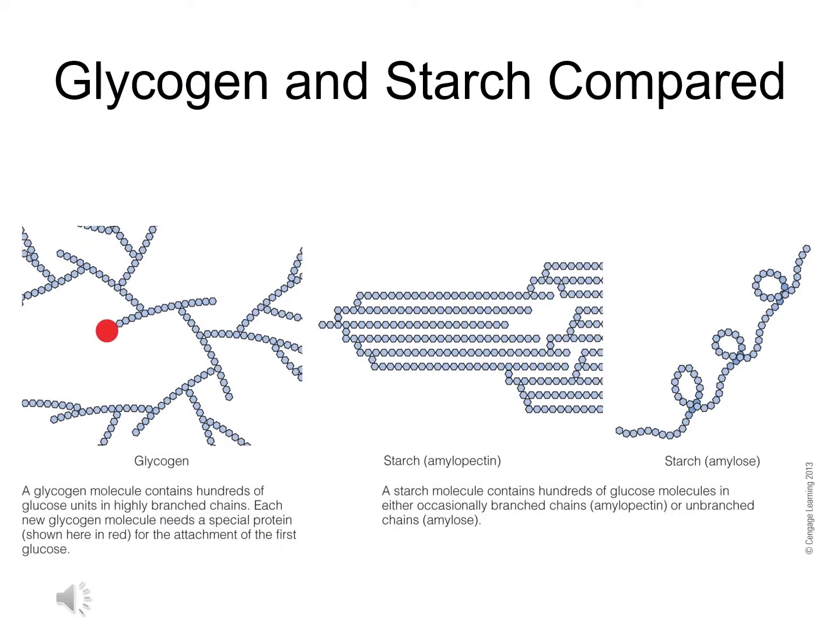If we take a look at this slide, we can see an example of a glycogen molecule compared to molecules of starch. Take a look at the glycogen molecule — you can see that there are hundreds of glucose units linked together in a very highly branched chain configuration. Because of that high amount of branching, our body can hydrolyze or break down those individual units very, very quickly. Also notice that each new glycogen molecule needs a special protein to be present before the glucose units can actually be attached. Starch, on the other hand, doesn't need any type of special protein to start the chain. This slide gives two examples of two different types of starches — they might be very compact, or they might be long chains, with or without branching, depending on the type of plant.